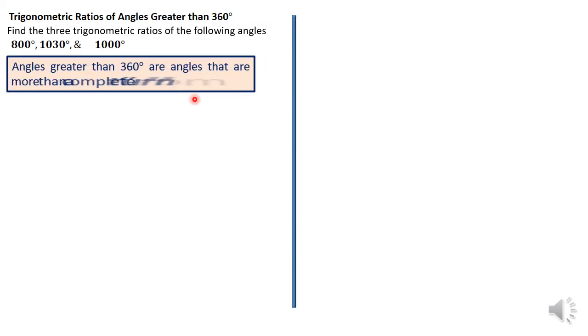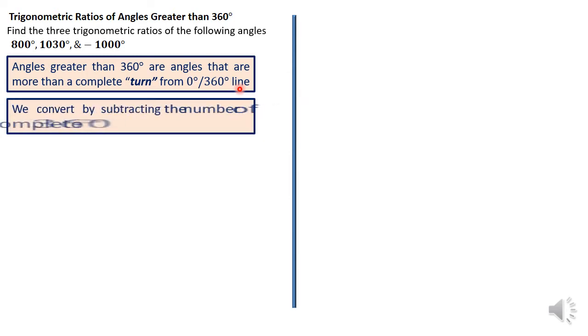Let me say that angles that are greater than 360 degrees are normally angles that are more than a complete turn from the 0, 360 degree line. Again, we normally convert by subtracting the number of complete 360 degree turns from the given angle. Now, let me show you how we do that by trying out the three questions before us.